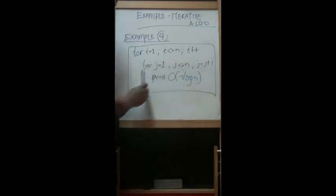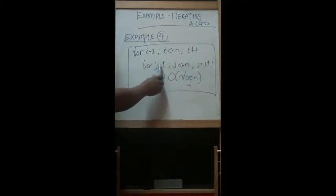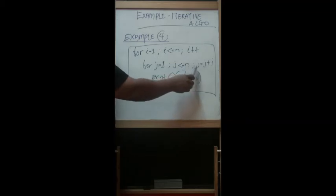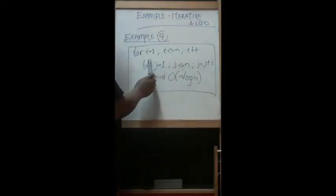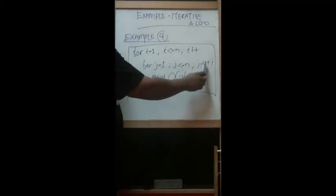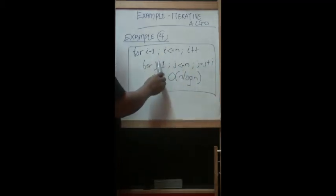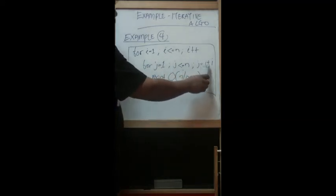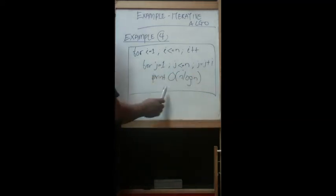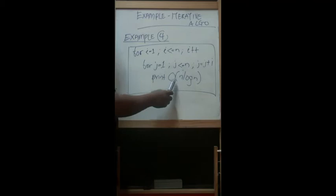For the inner loop: j equal to one, j less than or equal to n, j equal to j plus i. So if i equals one, j equals one means one plus one; if i equals one, j equals two means one plus two, and so on and so forth.